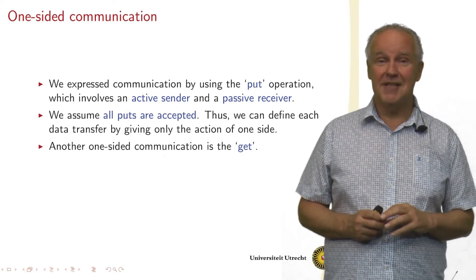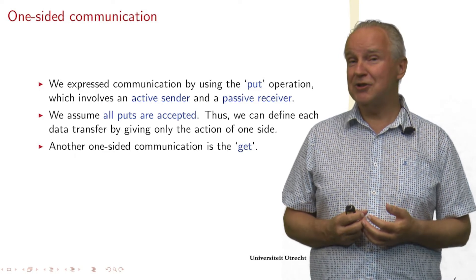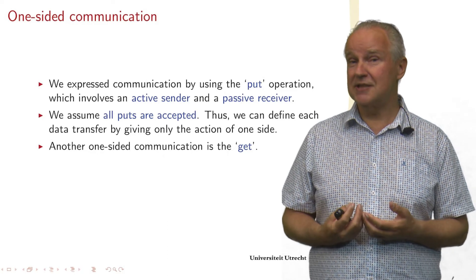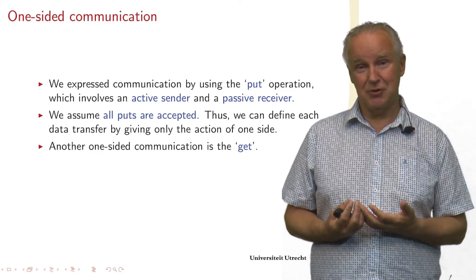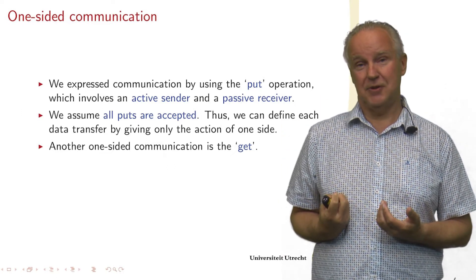We also have the get as a primitive. And the get we use if the receiver knows what it needs, but the sender doesn't know. Then the get is being done by an active receiver who basically requests, give me this, and then you get it. So that's one-sided communication.